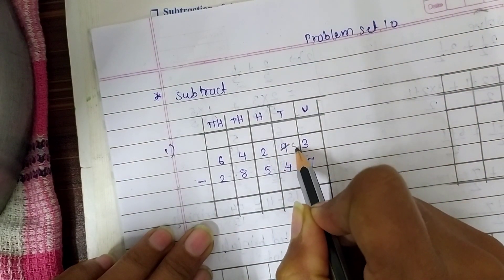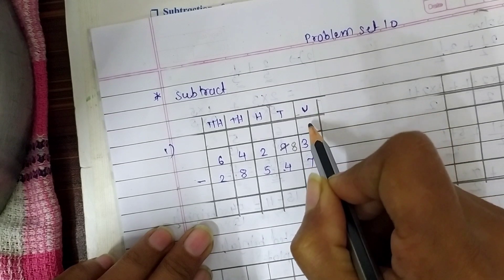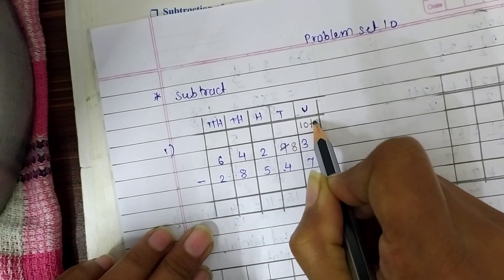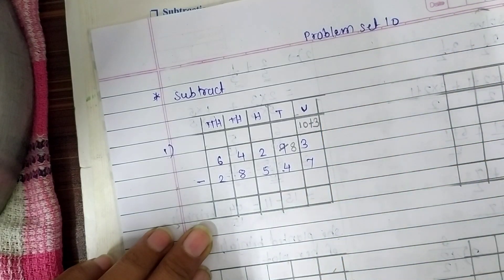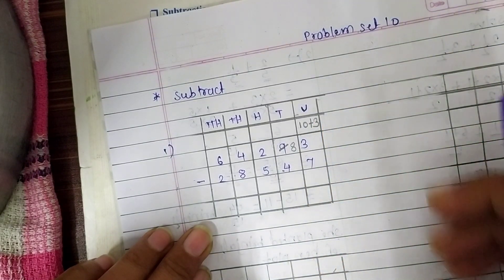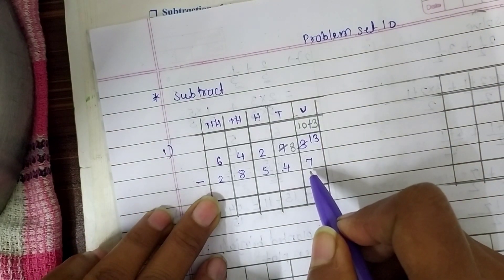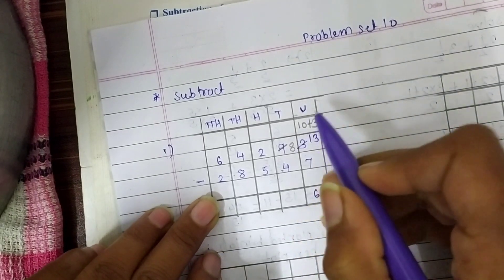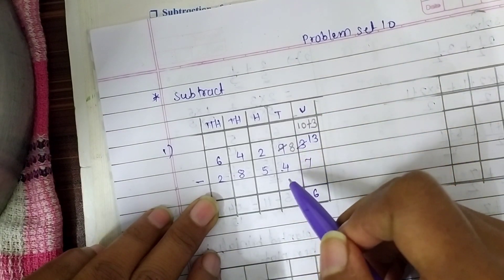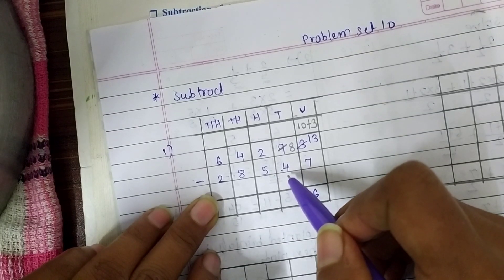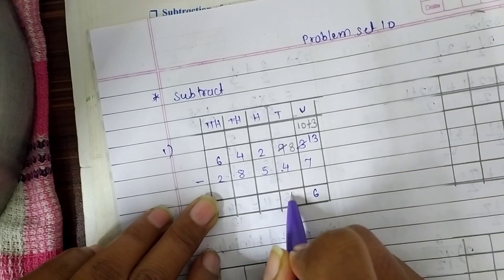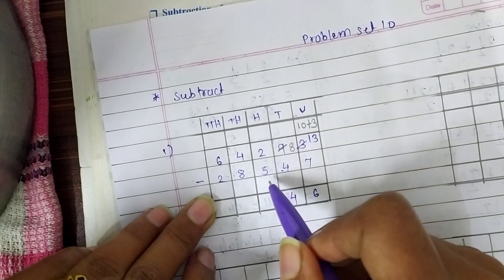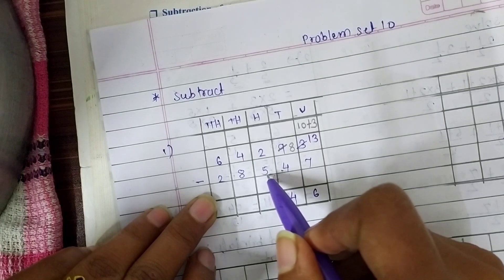So we are going to take 10s from 9. The number here becomes 13. So 13 minus 7, the number we get is 6. When we subtract 4 from 8 the number we get is 4. Now here again 2 is a smaller number and 5 is bigger than 2.